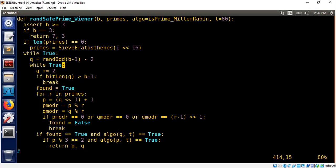First, it goes ahead and generates a random B minus 1 bit odd number and checks whether the number satisfies the property that we talked about. That Q mod R is congruent to R minus 1 by 2. This is R minus 1 by 2 mod R.